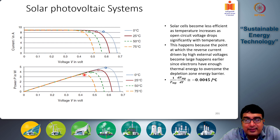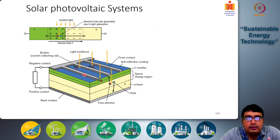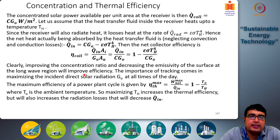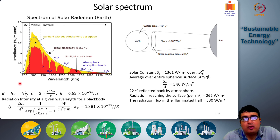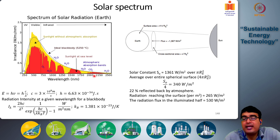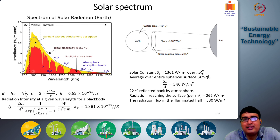Next we will discuss solar cell efficiency in more detail. Looking back at the solar light radiation spectrum discussed previously, solar radiation reaches Earth over a wide range of wavelengths — from around 250 nm in the ultraviolet range to around 2000 nm in the infrared. The visible range spans roughly 350 nm to 700 nm, with blue light on the short-wavelength side, red light on the long-wavelength side, and yellow-green light in between.